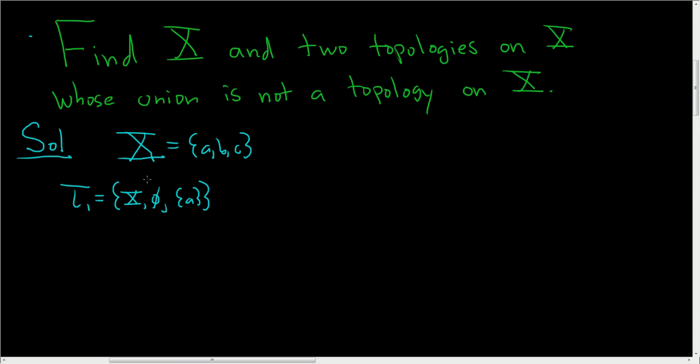This is certainly a topology on x. It contains the whole space and the empty set. The intersection of any of these guys is also here. And so is the union. So there's no problems.